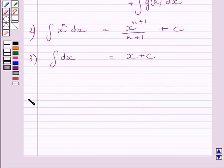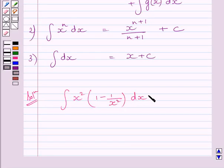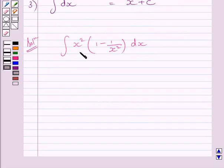Let us now start with the solution. Now we have to find integral of x square multiplied by 1 minus 1 upon x square dx. Now multiplying x square by this bracket, we get integral of x square minus 1 dx.